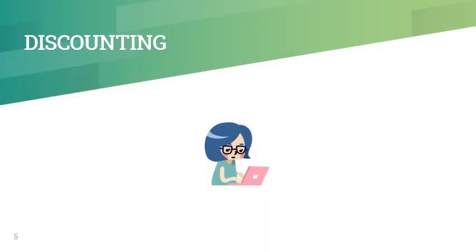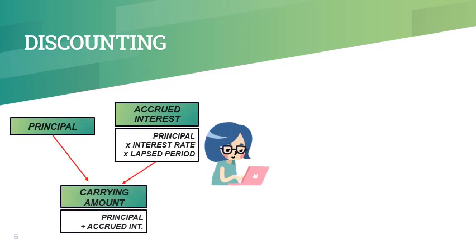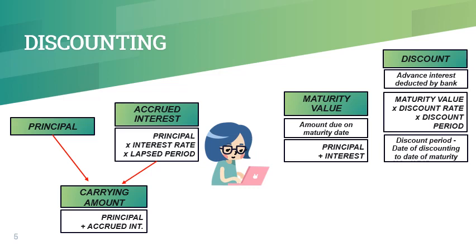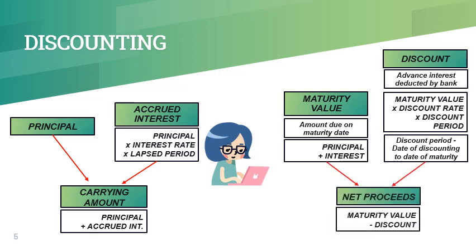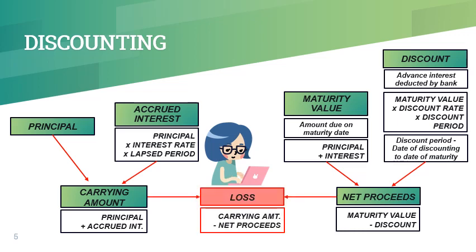The following are the relevant computations for discounting of a note. The sum of the principal of the note and accrued interest gives us the carrying amount. Accrued interest is computed as principal times interest rate times lapse period, where the lapse period is counted from the date of issuance of the note to the date of discounting. The maturity value less the discount or advanced interest gives us the net cash proceeds from discounting. The maturity value is the sum of the principal and the interest for the entire term of the note. The discount is computed as maturity value times discount rate times discount period, where the discount period is counted from the date of discounting to the maturity date. The difference between the carrying amount and the net proceeds is the loss on discounting of the note.